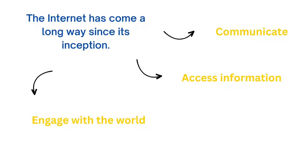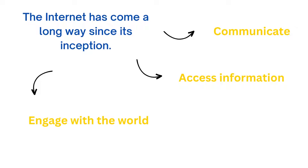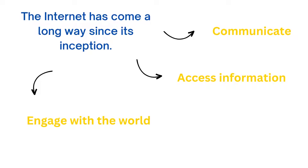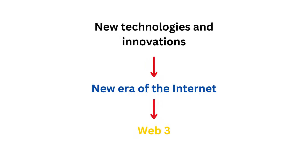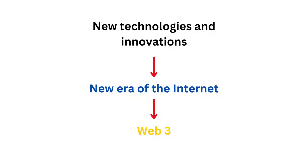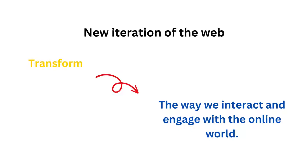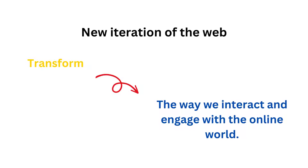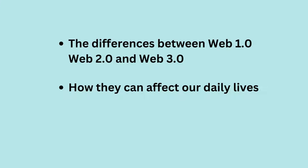The Internet has come a long way since its inception and has changed the way we communicate, access information, and engage with the world. With the advent of new technologies and innovations, a new era of the Internet has emerged, known as Web 3. This new iteration of the Web has the potential to completely transform the way we interact with the online world. As Internet users, it is important to understand the differences between Web 1, Web 2, and Web 3, and how they can affect our daily lives.